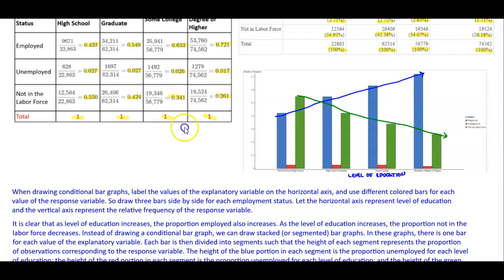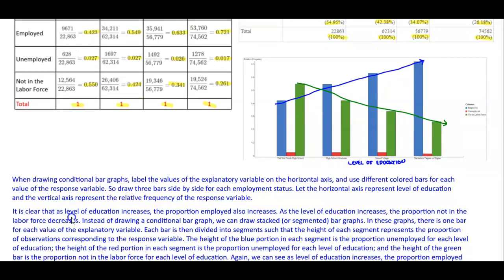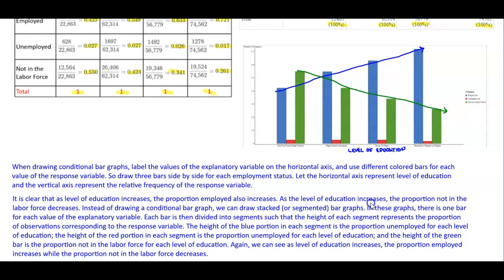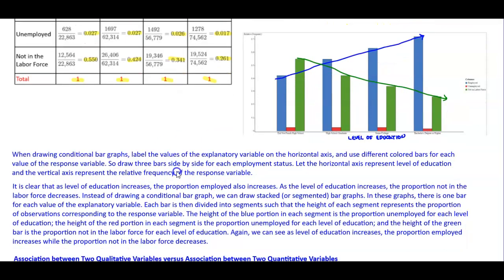It is clear that as the level of education increases, shown in the blue graph, the proportion employed also increases. And as the level of education increases, the proportion not in the labor force decreases.